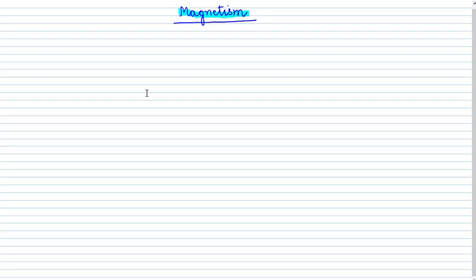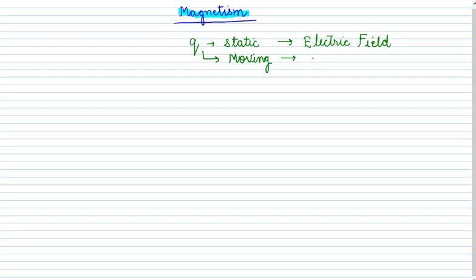Hello students, welcome to physics lab. Today we study the unit magnetism. Whenever there is a static charge, represented with the symbol small q, it produces an electric field. But if this charge q is moving, then in addition to the electric field it also produces a magnetic field. So a static charge has only electric field, but a moving charge has electric field as well as magnetic field.